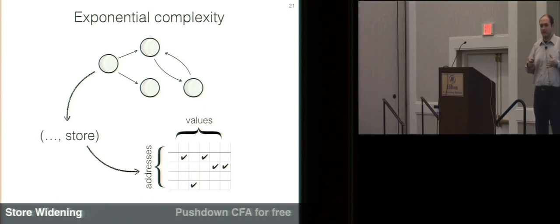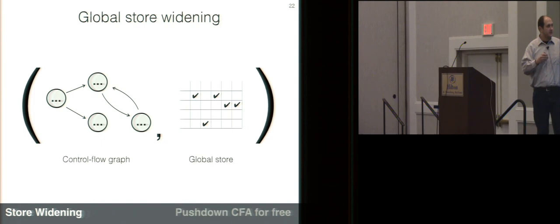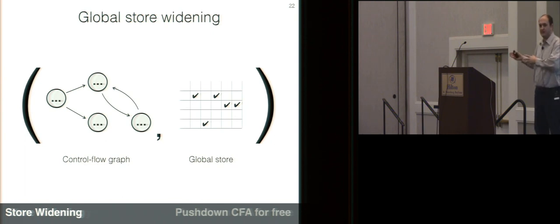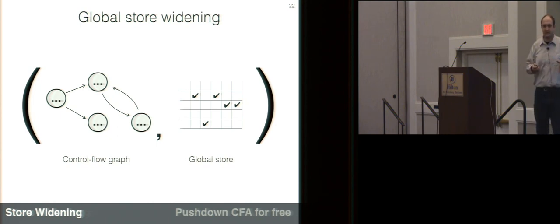To fix this, we use a form of widening that relaxes the relationship between the other components of our state and the store. Equivalently, we do a coarser form of structural abstraction: a control flow graph without stores paired with a single global store, maintained as the least upper bound of all stores seen so far. This over-approximates all the stores we'd have in the naive analysis. It leads to some genuine imprecision, but it's a very common technique that's often reasonable in practice, and it gets us to a polynomial-time analysis.